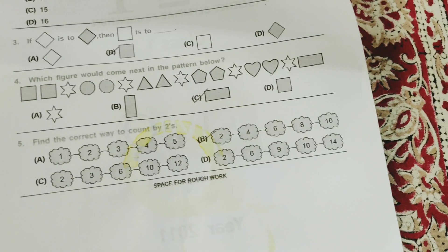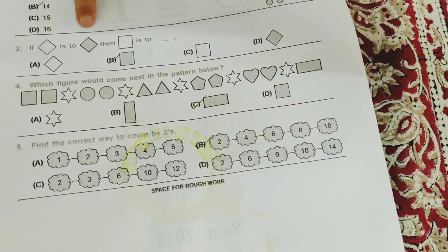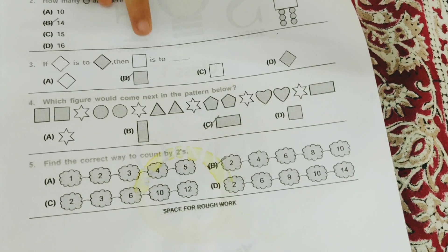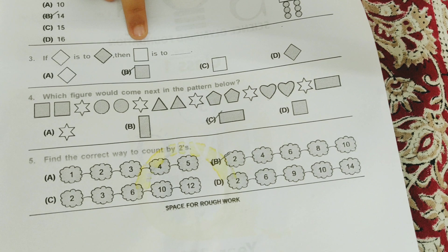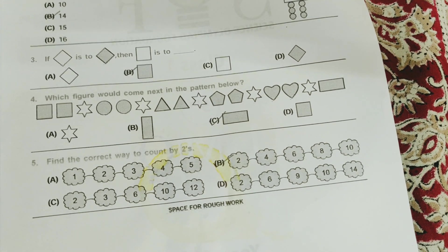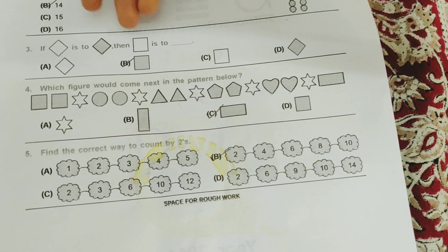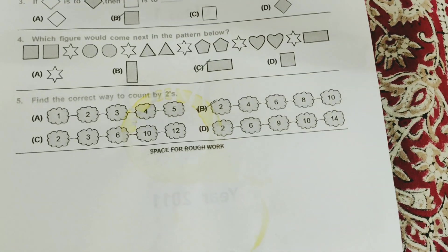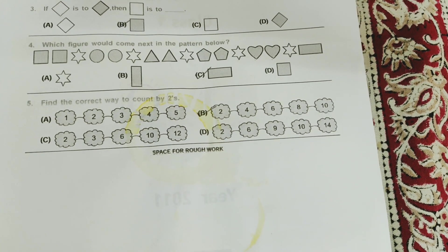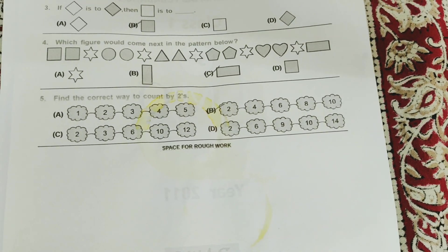So if an unshaded diamond is to a shaded diamond, then an unshaded square is to... Do you know, guys? Yeah, I do. It's an unshaded square. Easy, right? Because I already told, unshaded to shaded, unshaded to shaded.